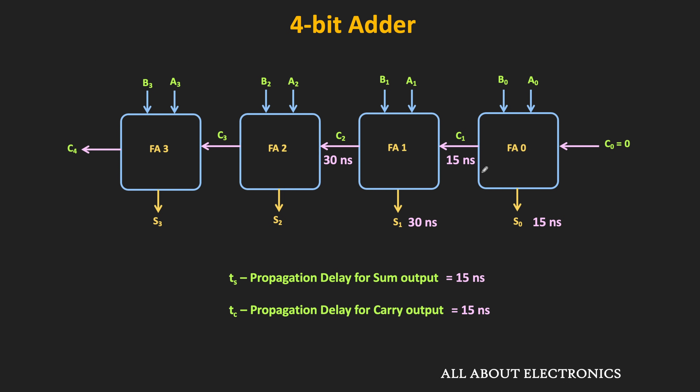C2 and S1 are available after 15 + 15 = 30 ns. FA2 must wait until 30 ns and generates valid carry and sum at 45 ns. The last full adder FA3 must wait until 45 ns to get the valid carry input C3, and C4 and S3 are available only after 60 ns. So for a four-bit adder, the valid sum result is available only after 60 nanoseconds.